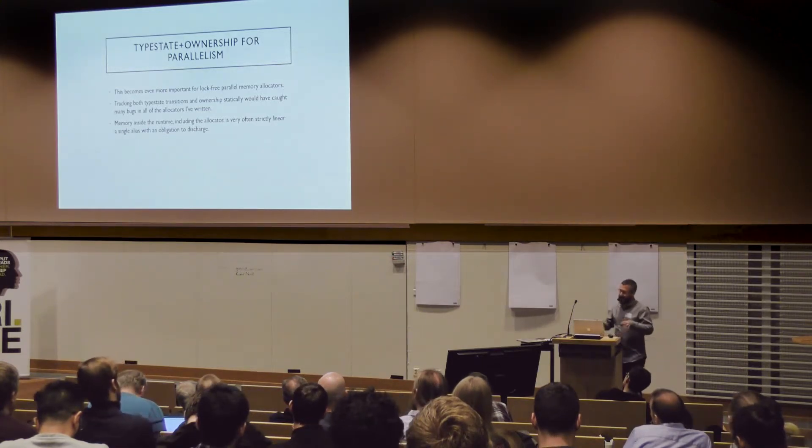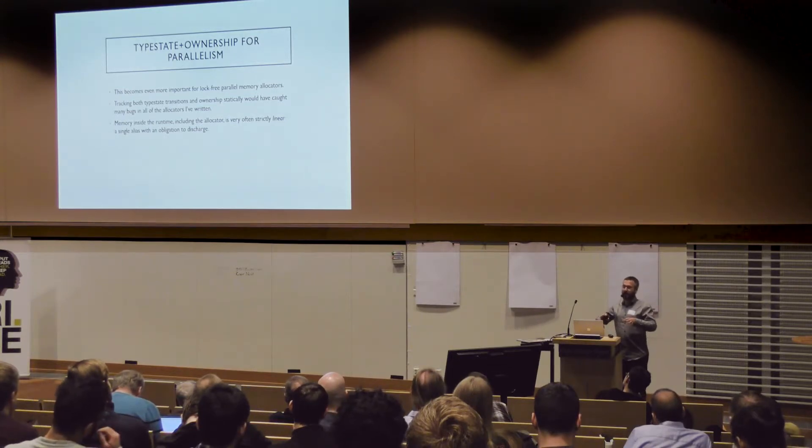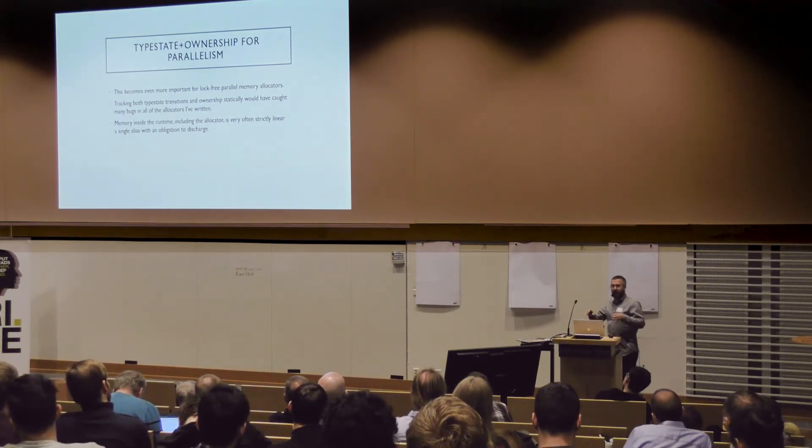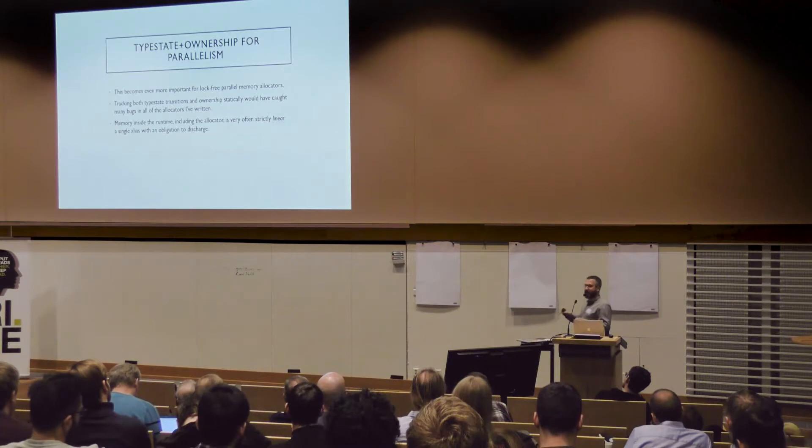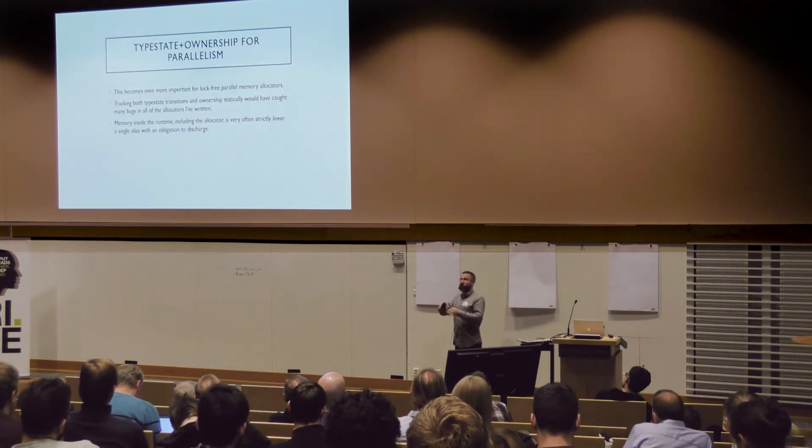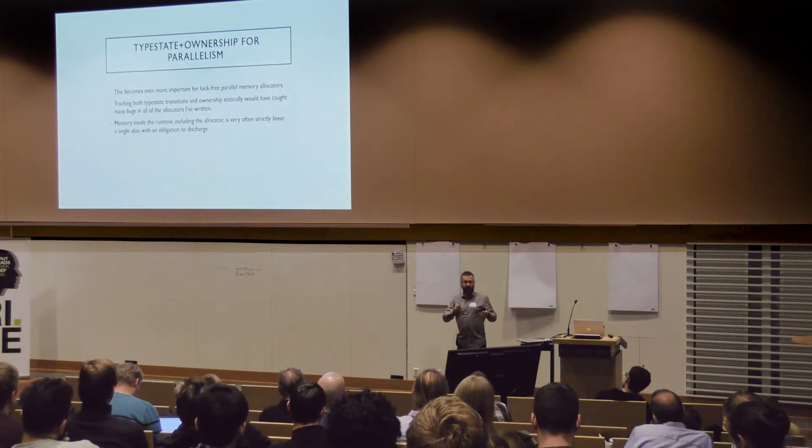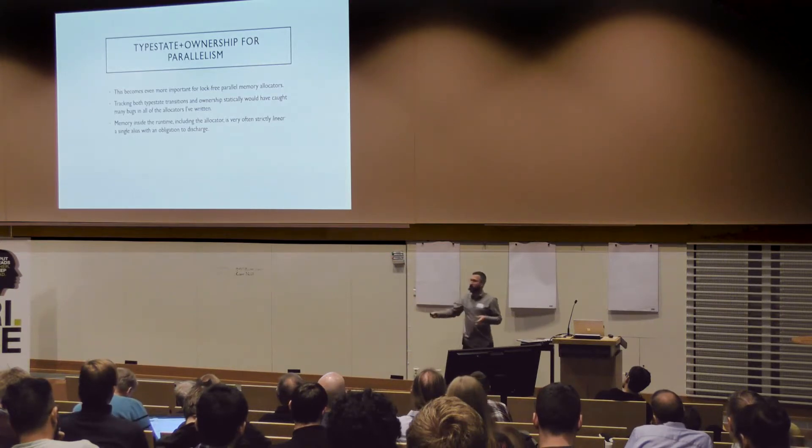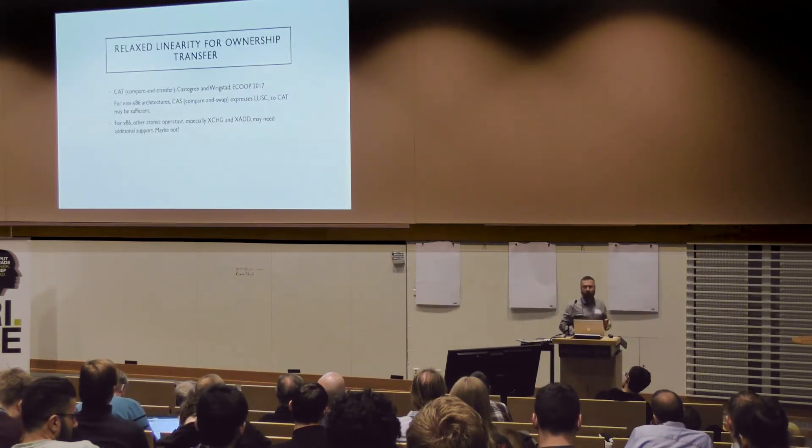So to be specific about the example of the memory allocator, inside a runtime, inside the allocator, memory is generally speaking linear. You have a single reference to it, and you have an obligation to discharge that reference once. Whether that means to transfer it to some other module, to change its type and keep the responsibility discharge, or to hand the entire thing back to the operating system. That linearity is exploitable.